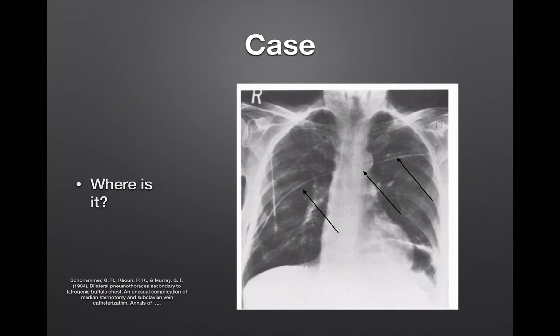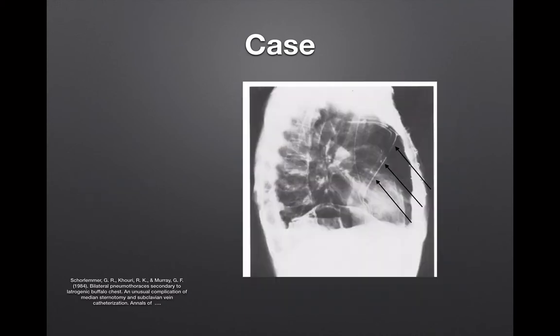Looking at the x-ray, you have to ask yourself where the tube is — and seeing this would scare most people. It's a transmediastinal chest tube, potentially a transmediastinal stab wound. It's not something that everybody's comfortable with. But what are we going to do? How do we confirm where it is? The patient is septic, but you manage to get a lateral view, and it's clearly going through the anterior chest — not really penetrating anything big.